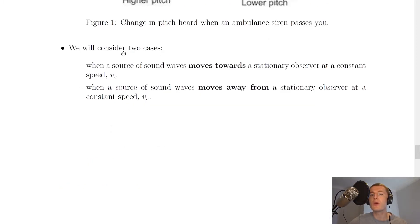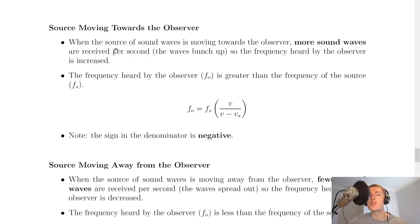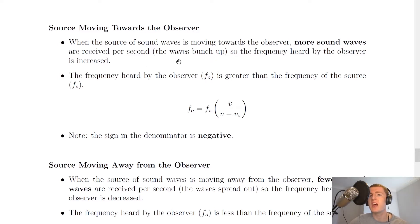We will consider two cases: when a source of sound waves moves towards a stationary observer at a constant speed VS, and when a source of sound waves moves away from a stationary observer at a constant speed VS. For the first case — source moving towards the observer — when the source of sound waves is moving towards the observer, more sound waves are received per second, i.e. the waves bunch up, so the frequency heard by the observer is increased.